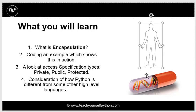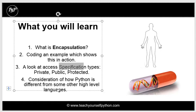The key concept with encapsulation is information hiding. It is one of the core principles of object-oriented programming, and it's to do with hiding the internal implementation details of a class. We'll be looking at access specification types such as private, public, and protected, and we'll discuss how Python is actually quite different from some other high-level languages in this respect.